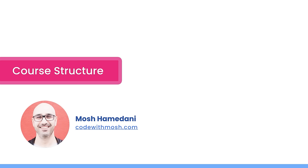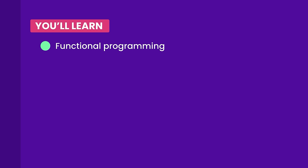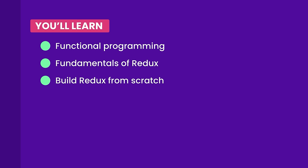Before we dive in, let me give you a quick overview of how I'll structure this course so you can get the most out of it. Redux is based on functional programming principles, and a lot of people find Redux confusing because they're not familiar with these concepts. The next section is all about functional programming in JavaScript — higher order functions, composition, currying, immutability, and so on. The following section covers the fundamentals of Redux: reducers, actions, action creators, and all the building blocks. After that, I'll show you how to implement Redux from scratch so it will no longer be a mystery to you.